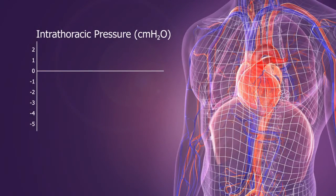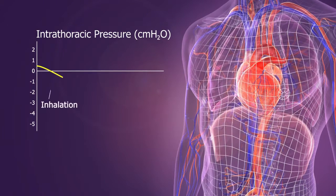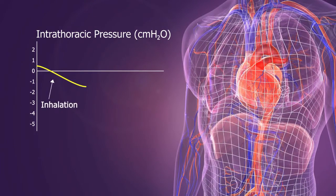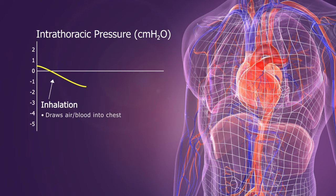Now let's talk about how intrathoracic pressure impacts circulation. When a healthy person at rest inhales, the diaphragm moves down and the chest wall moves out. This creates a vacuum that draws air and blood into the chest and slightly lowers ICP.